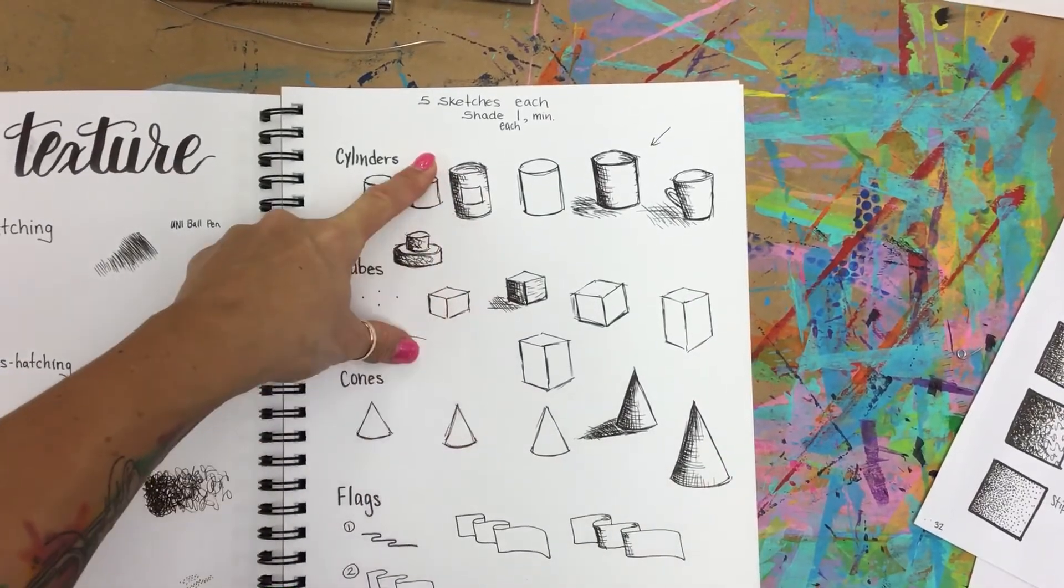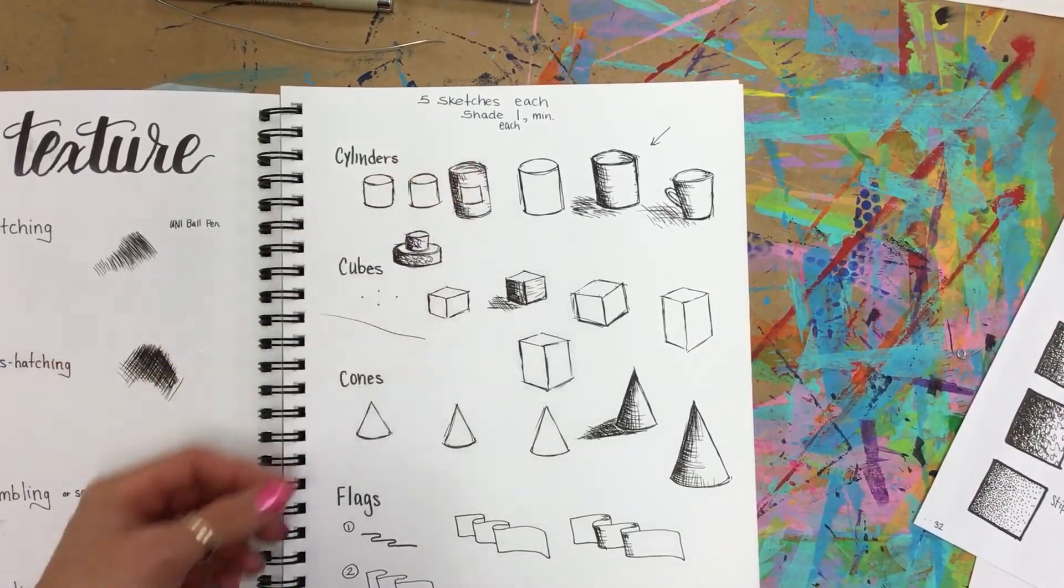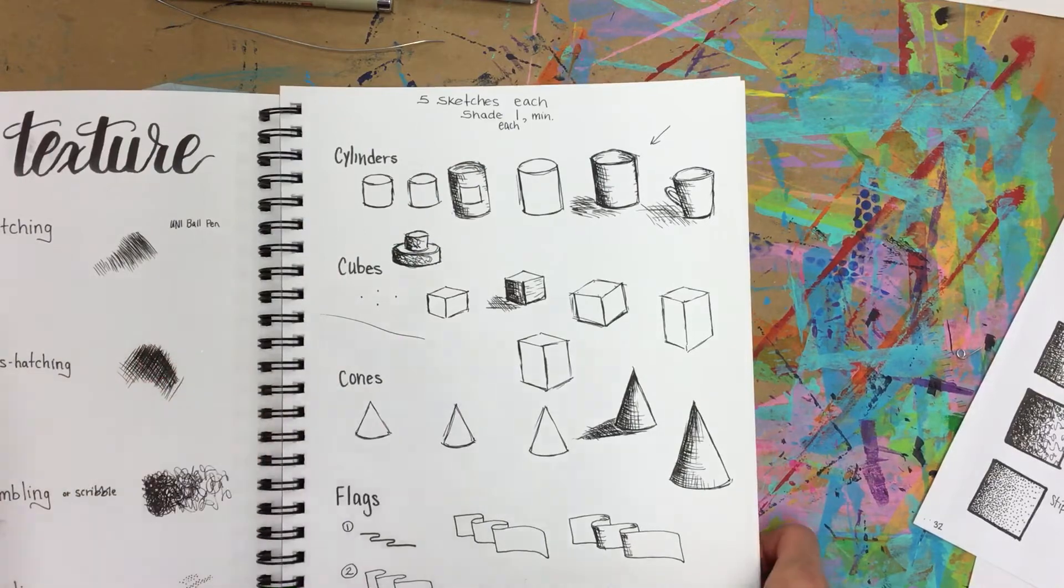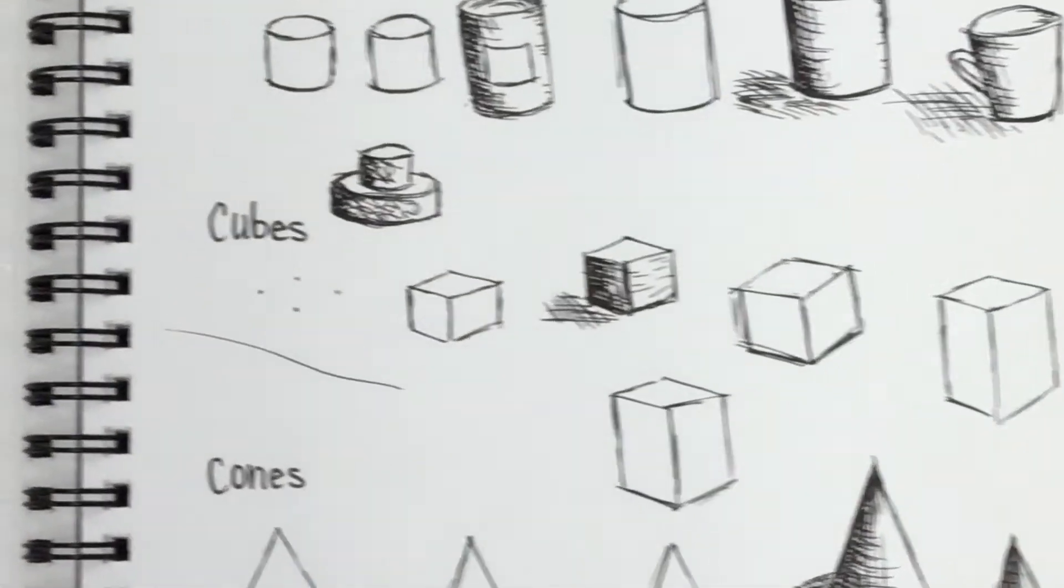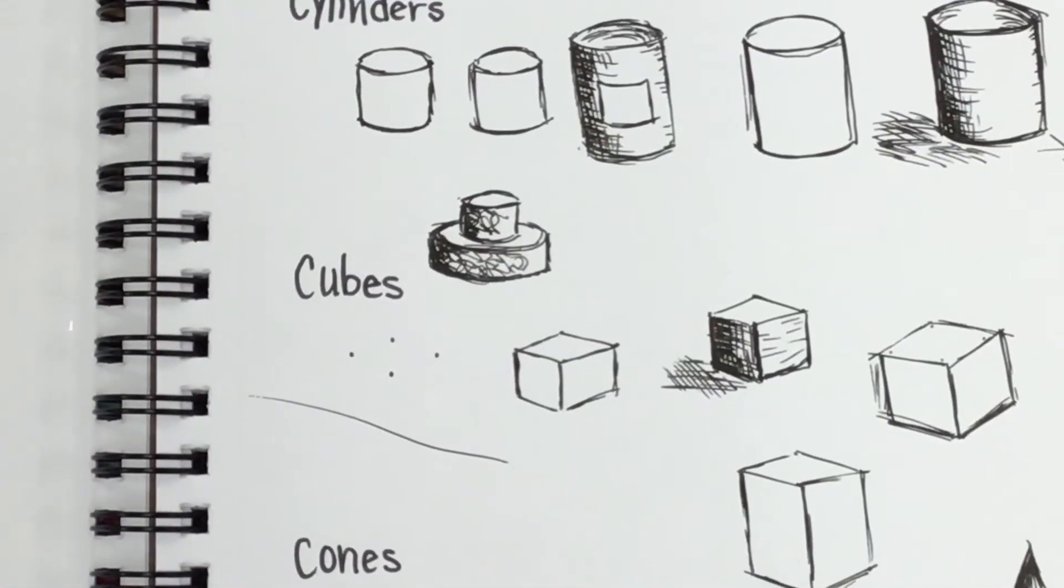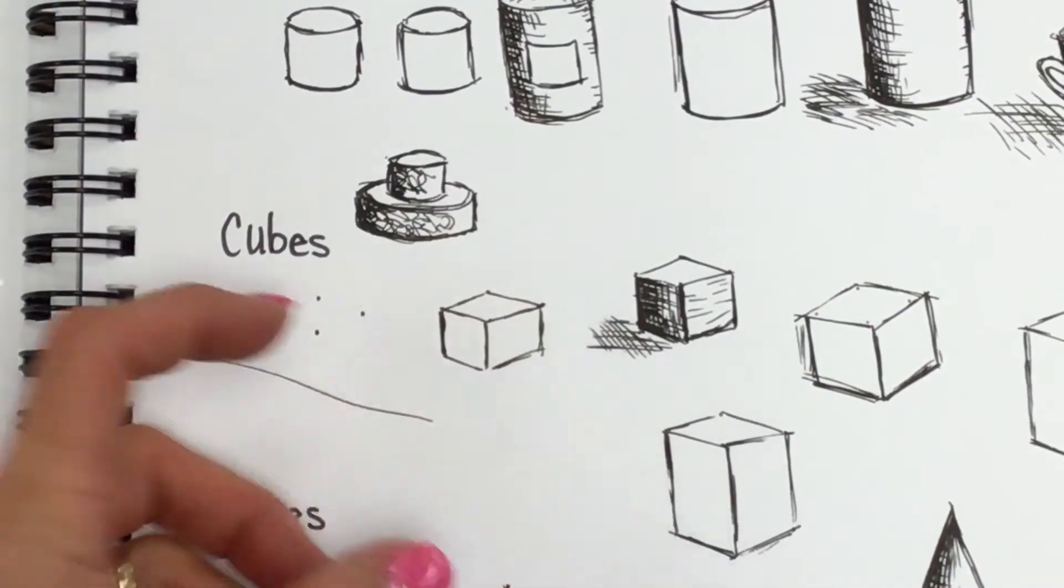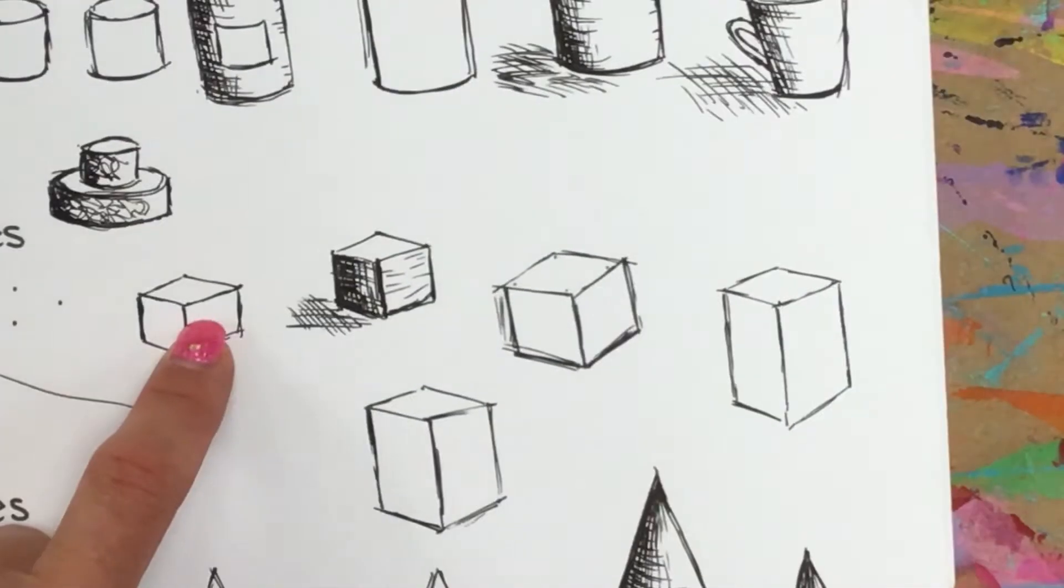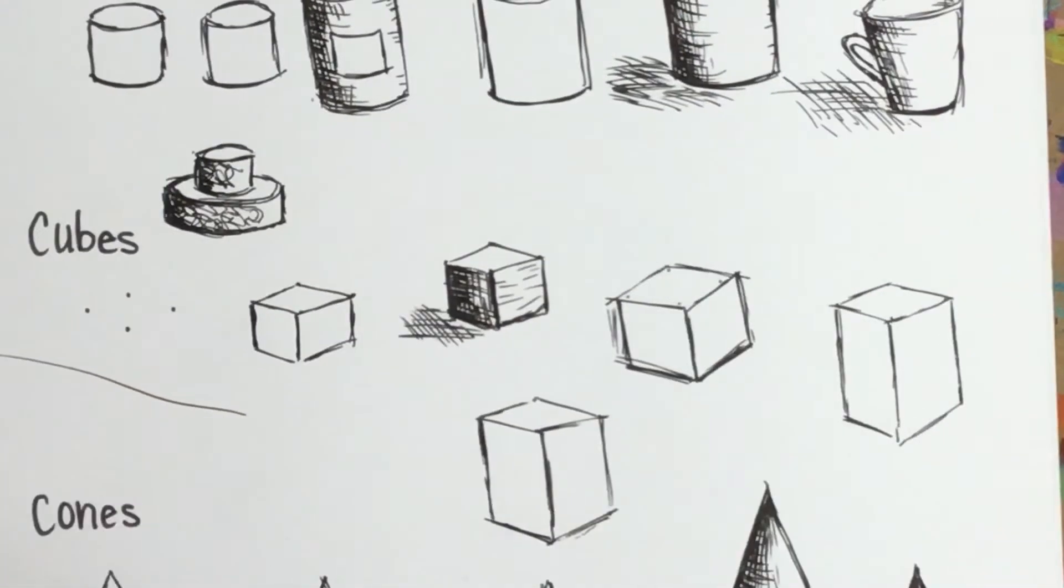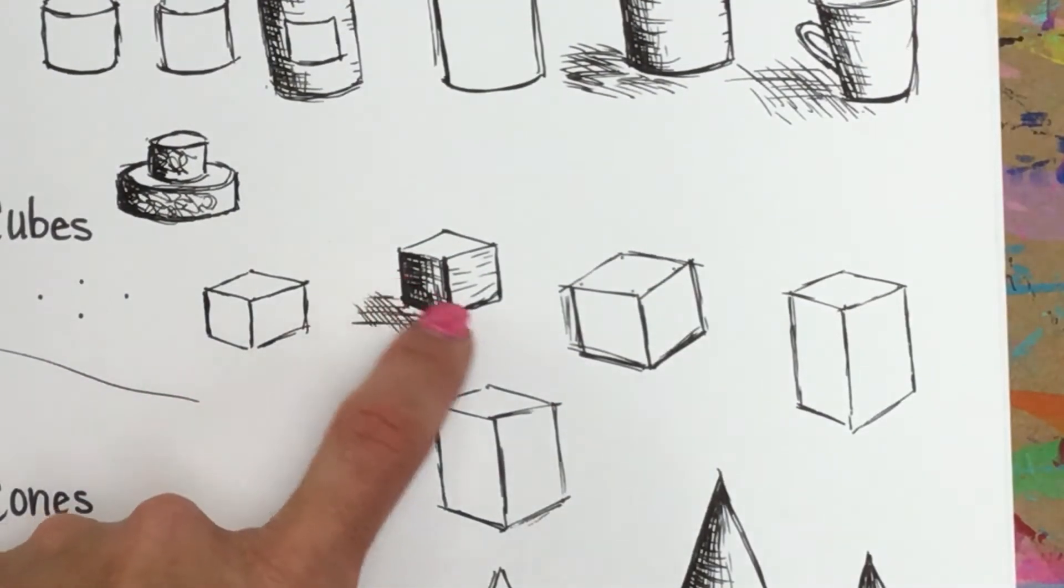For this part of the project, for all of the shapes, I'm having you draw at least five if not more and shading at least one in each one if not more. For the cubes to remember: your top and bottom are kind of squished together and the outsides are elongated to make it look like you're seeing it from the side and not directly above.